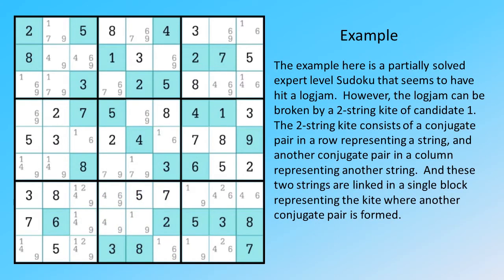The example here is a partially solved expert level Sudoku that seems to have hit a logjam. However, the logjam can be broken by a two-string kite of candidate 1. The two-string kite consists of a conjugate pair